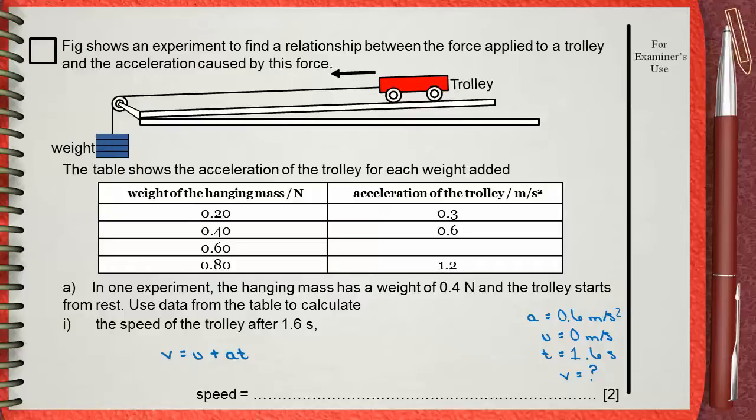V is the final speed, U is the initial speed, A is the acceleration, and t is the time. If you substitute by the corresponding values, this will give the final answer of the final speed: 0.96 meters per second.